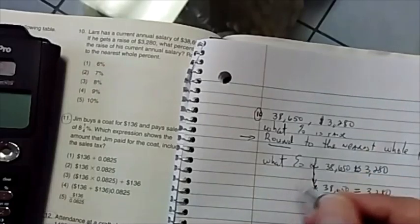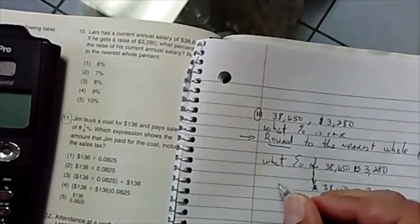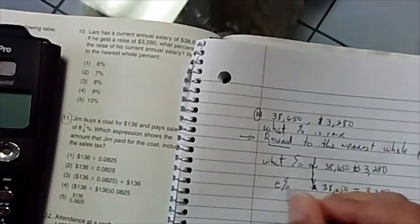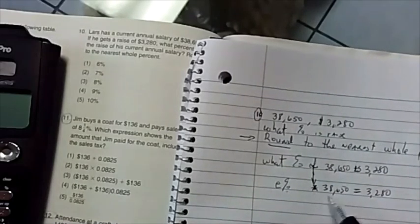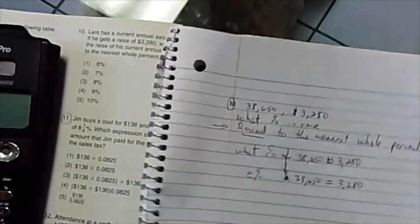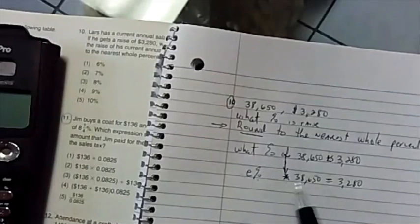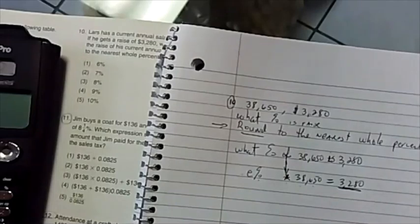And then what percent is the same thing as saying, let's do, what's your favorite letter? E. E percent. Me too. That's my friend. So E percent times 38,650 equals 3,280. That's probably the more logical way to think about it. Some percent of our salary is going to give us the amount raised.